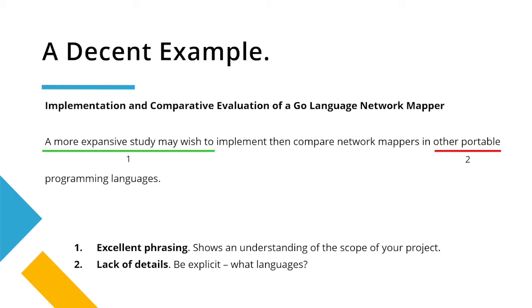Moving on to our decent example. Unlike the poor example, this example gives sound reasoning for why we are suggesting this as future work — so they're not using 'given more time.' You can see the phrasing 'a more expansive study may wish to,' which is right out of a phrase bank — that's good. Point two, which is rather minor: the future work should clarify what is meant by 'portable languages' if it's never appeared before. Make sure you explain terminology, because it's not clear why portability is interesting here. Overall, this would achieve a better mark than the poor example and would be getting towards the higher end of marks.